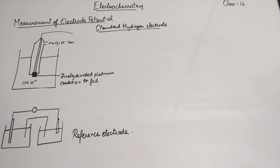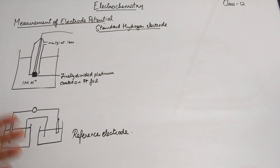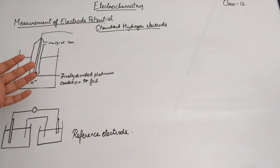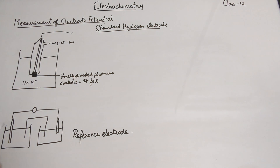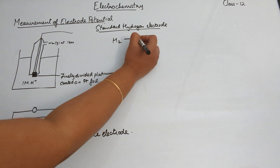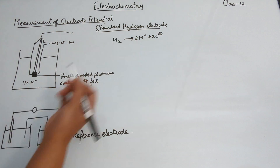The foil is where the reaction takes place. Platinum is used because it is inert — it just facilitates the process but does not itself undergo any reaction. The standard hydrogen electrode can act as either a cathode or an anode.